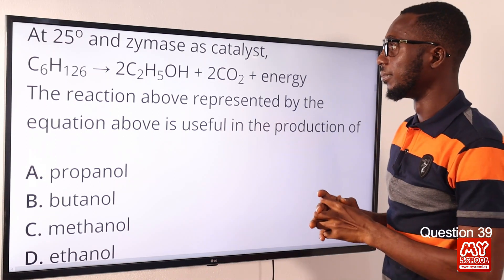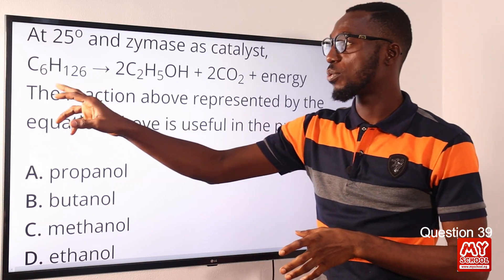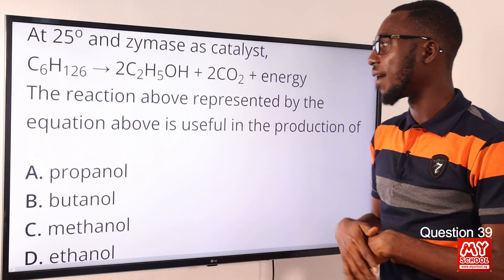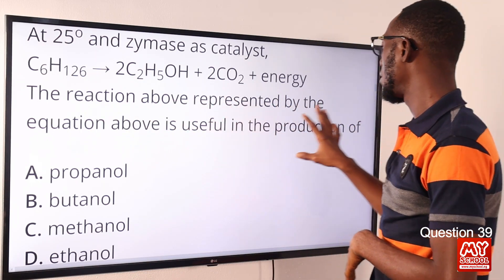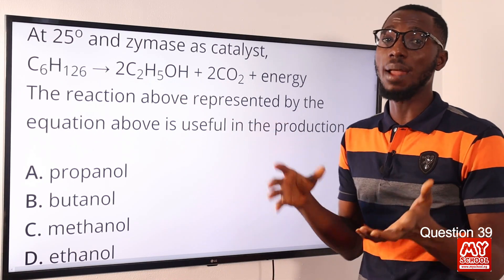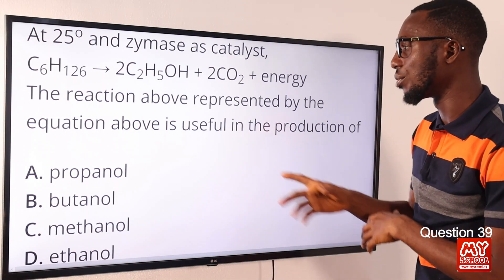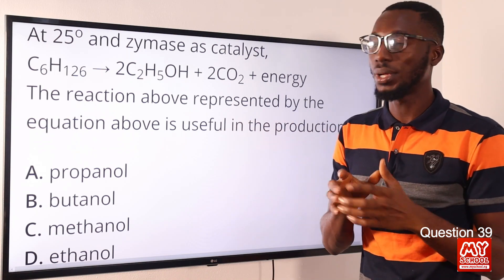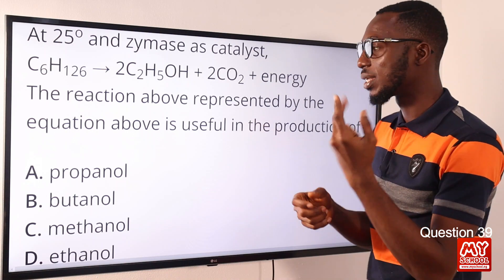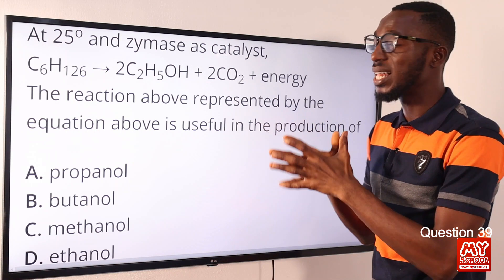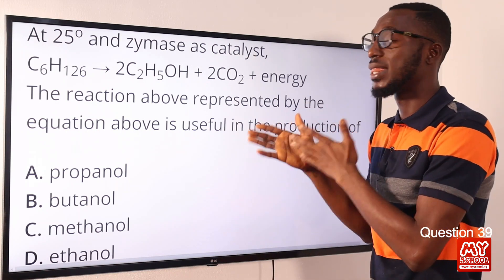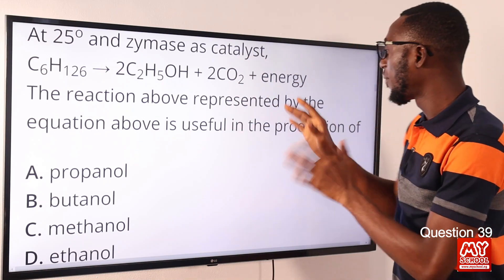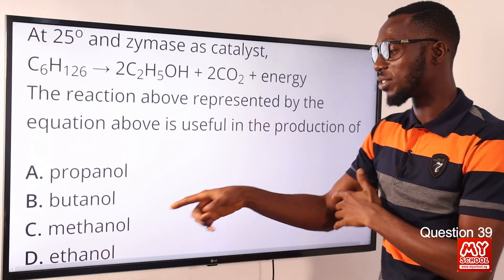Question 39. Zymase acts as catalyst at 25 degrees Celsius. Glucose C6H12O6 gives 2 moles of ethanol alongside carbon dioxide. The reaction represented by this equation is useful in the production of ethanol — the creation of ethanol from starchy foods like potato, cereals like rice, maize, and guinea corn. The starch is converted to maltose by the enzyme diastase. Yeast contains two enzymes: maltase, which breaks maltose into glucose, and zymase, which decomposes glucose into ethanol. The correct option is option D: C2H5OH.